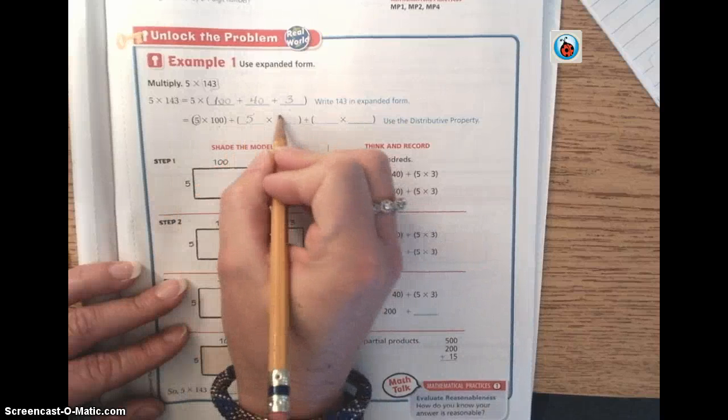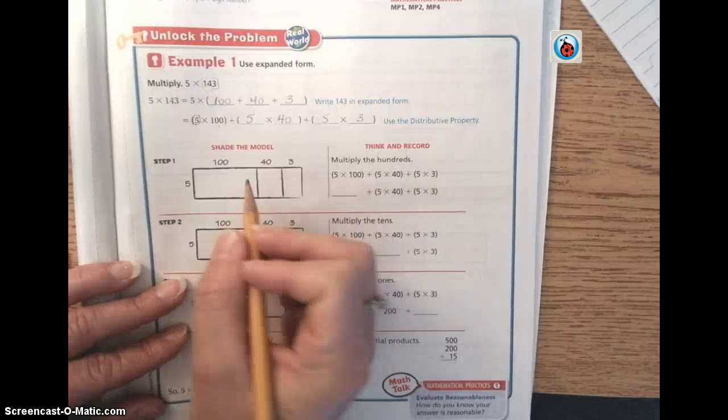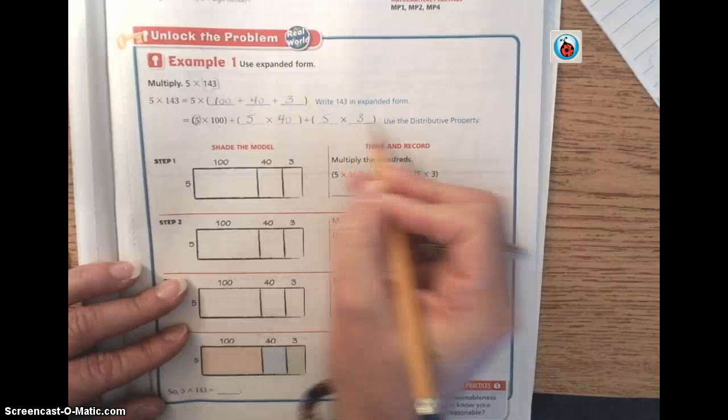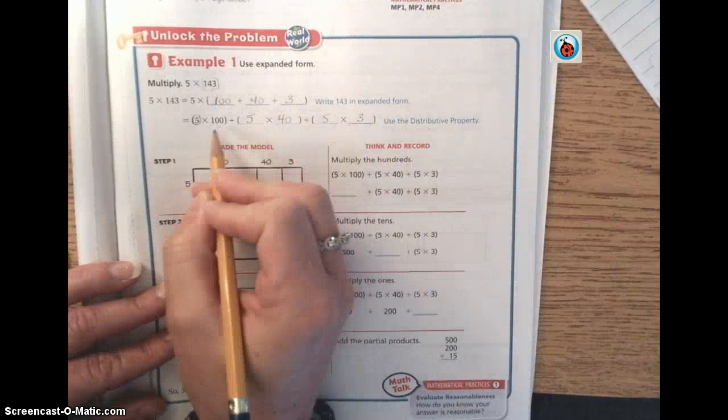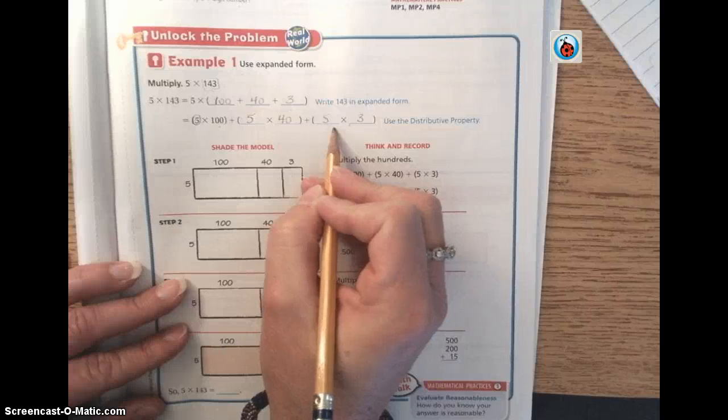So next we're going to do 5 times 40, and we're going to do 5 times 3. So we essentially broke it into three different multiplication problems, very similar to the distributive property, where it's broken into parts, three multiplication parts, and then you add to get your answer.